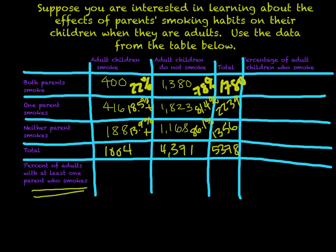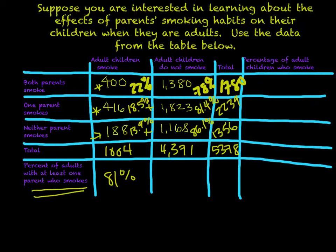Looking at the percent of adults with at least one parent who smokes: among adult children who smoke, we look at the relevant counts — 816 divided by 1,004 — and we get 81%. For adult children who don't smoke, we have 1,380 plus 1,823 divided by 4,371, which gives us 73%. That's about 8% less — not a lot, but 8% less.